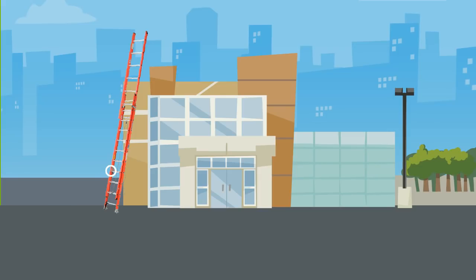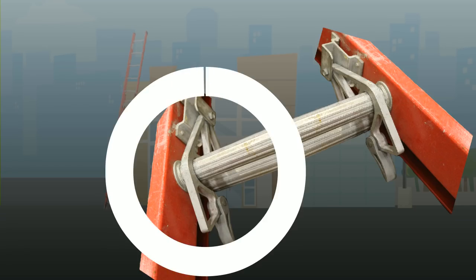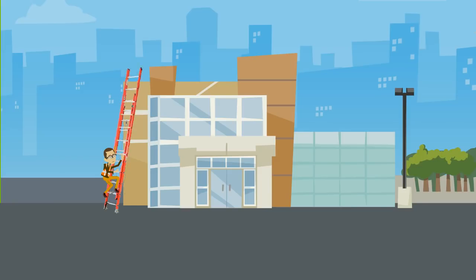There are two rung locks attached to the fly section that keep the fly portion in place. They fit over the top of a rung or the fly section. These locks function as brackets and prevent the fly from sliding down once it supports the climber's weight.